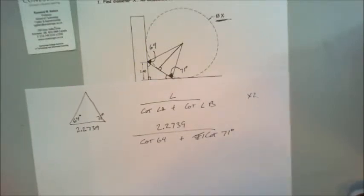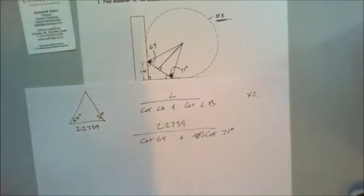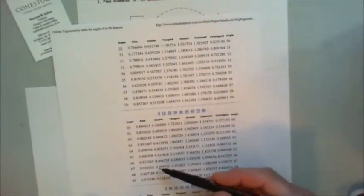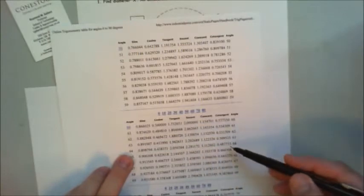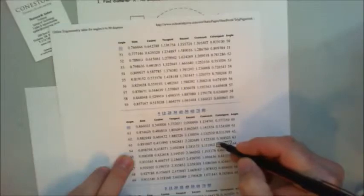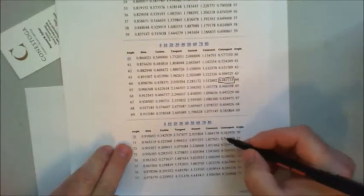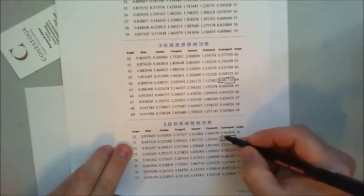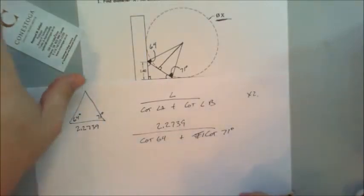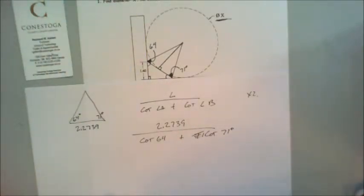So our L is going to be 2.2739 over cotangent 64 plus cotangent 71. Now there is a simpler way if I wanted to cheat. I could print out sine sheets. I could go 64, cotangent of 64 is going to be this number, cotangent of 71 is going to be this number. But we're not going to do that because what happens if it's an odd number instead of just degrees? What if it's degrees, minutes, seconds?